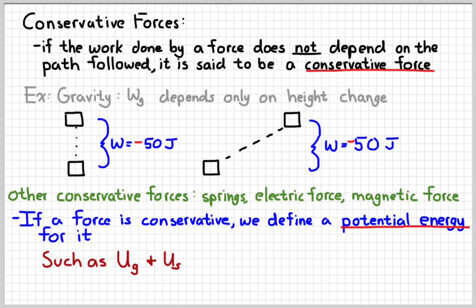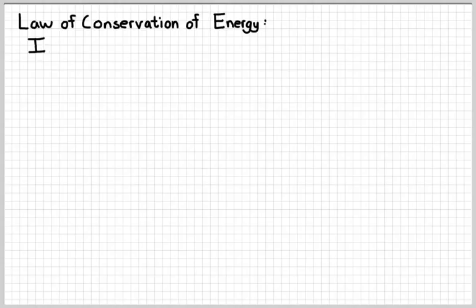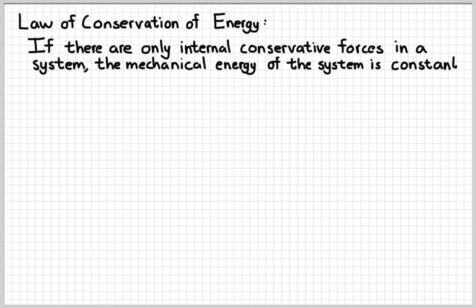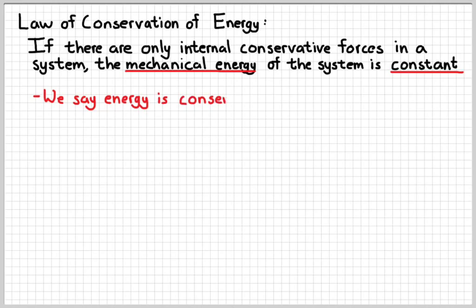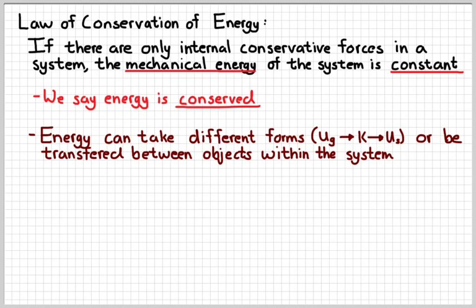So here's the big law. If the only forces we have are forces that are internal to our system and conservative forces, then the mechanical energy of that system is going to be constant. And when something is constant, the fancy science word to express that is to say that it is conserved. Now we can change that energy between different forms, like gravitational potential energy to spring, kinetic, back and forth. Or we can transfer it between objects within the system, but the total is going to remain constant.